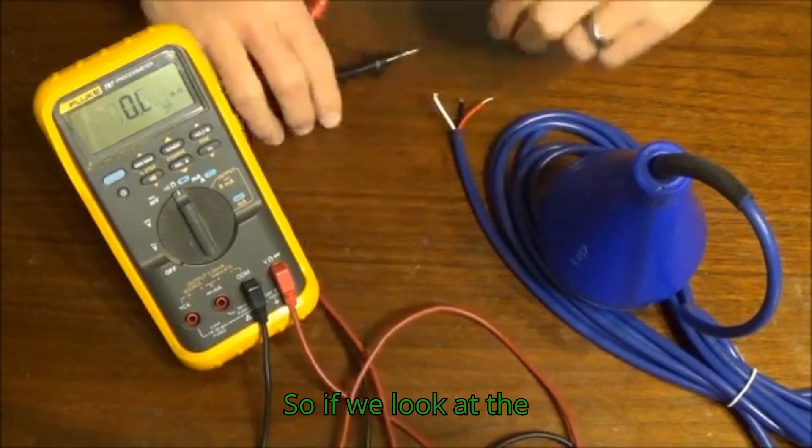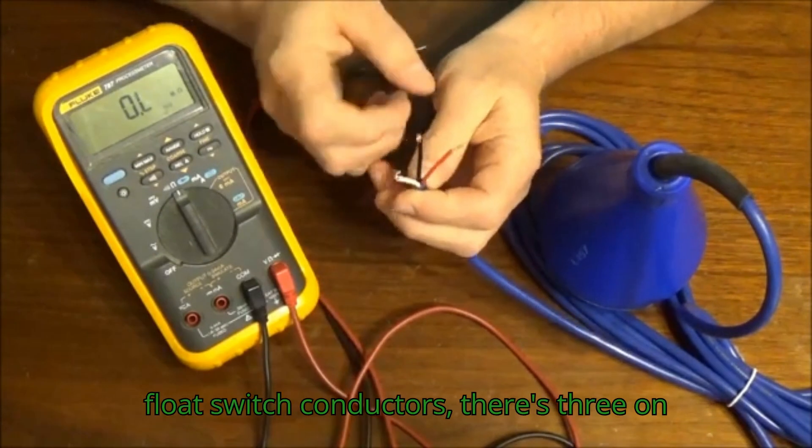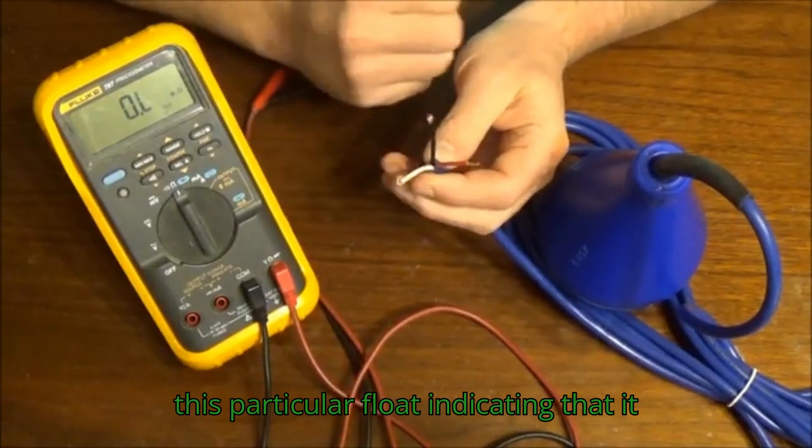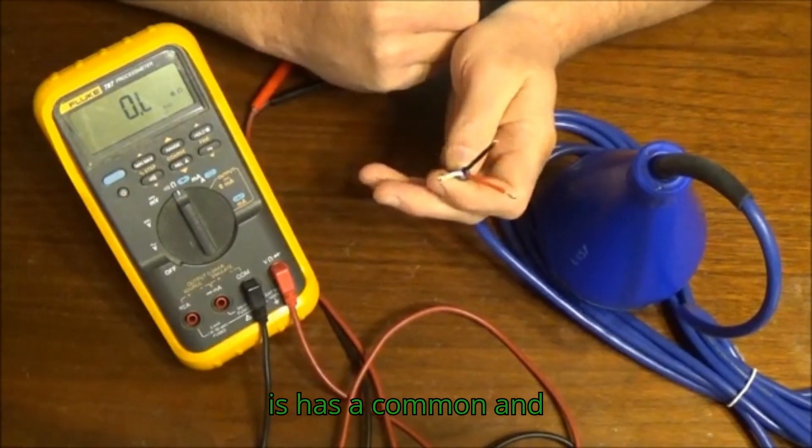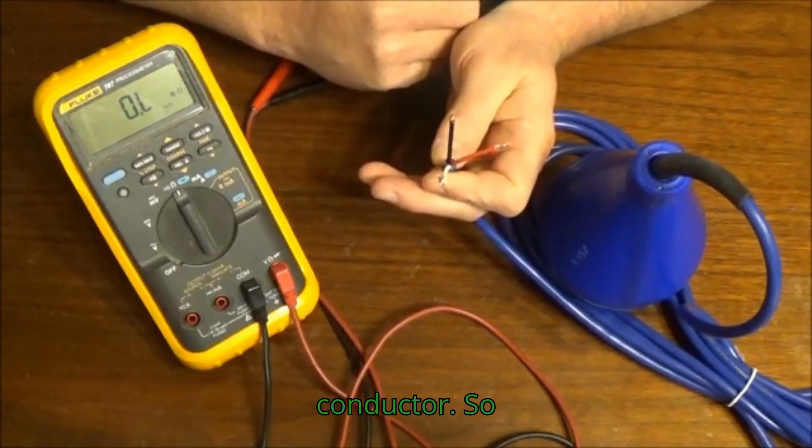If we look at the float switch conductors, there's three on this particular float, indicating that it has a common and normally open and normally closed conductor.